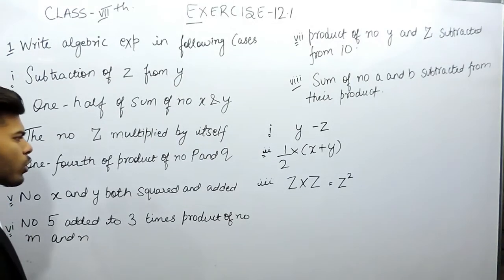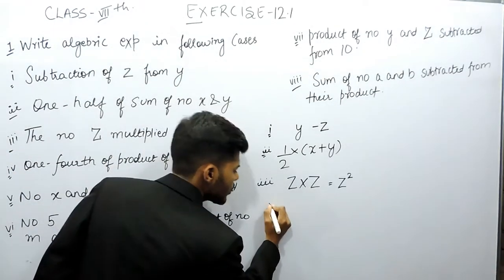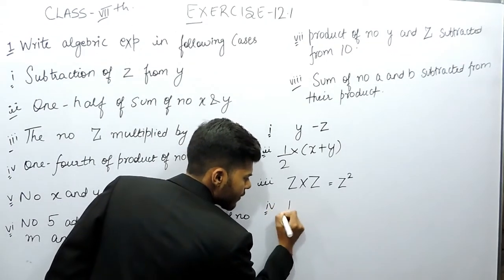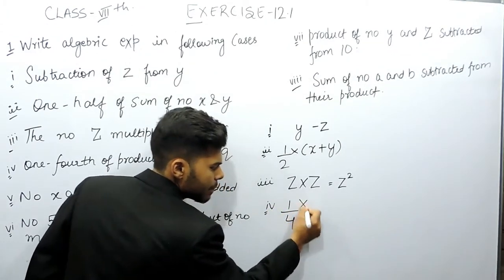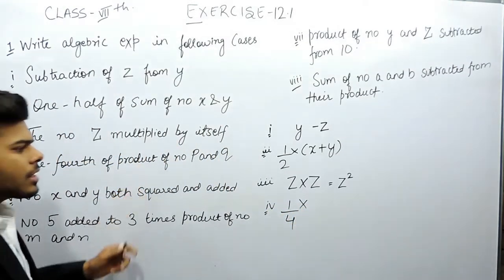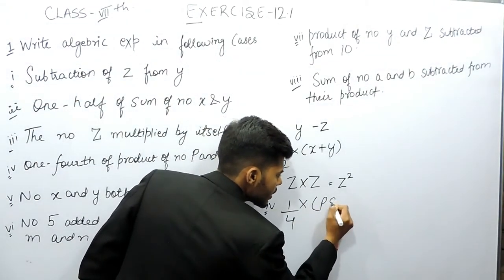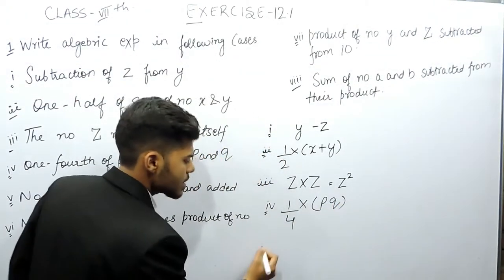Part 4, one fourth of the product of number p and q. One fourth of means multiplication. Product of number p and q, that means pq. So this is the answer.